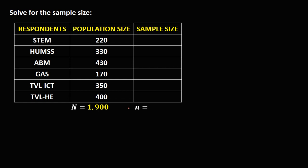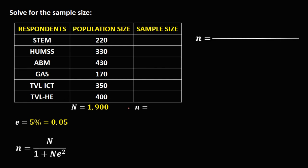To compute the sample size using Sloven's formula, since there's no given margin of error, e is 5%, which converts to 0.05 in decimal. We can now compute the sample size with population size 1900 over 1 plus 1900 times 0.05 squared.